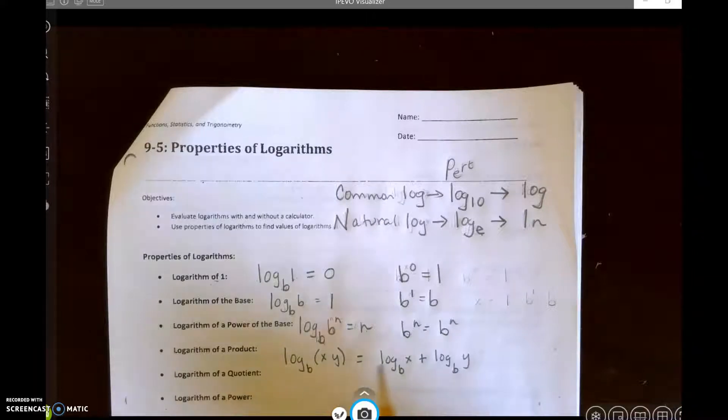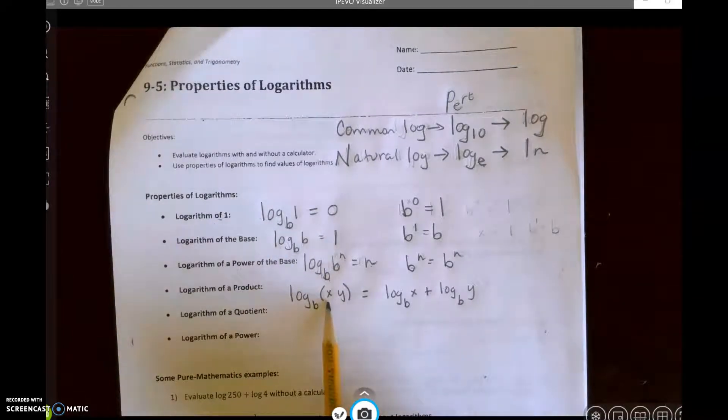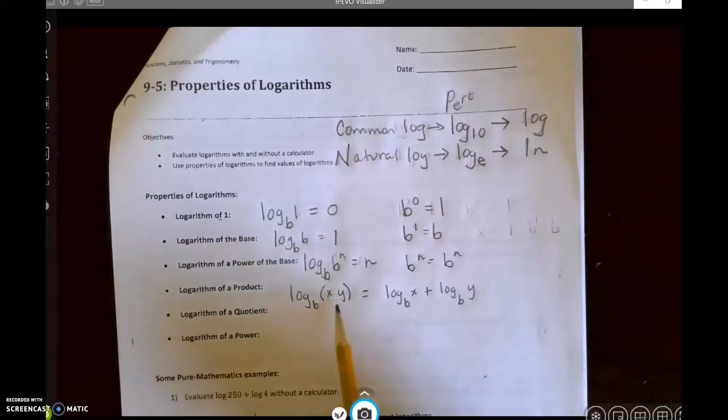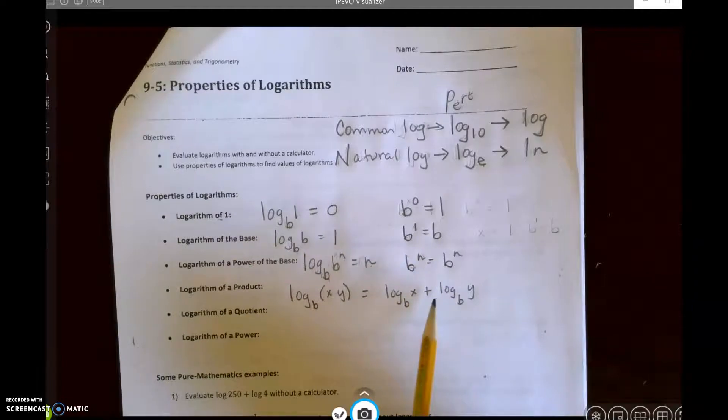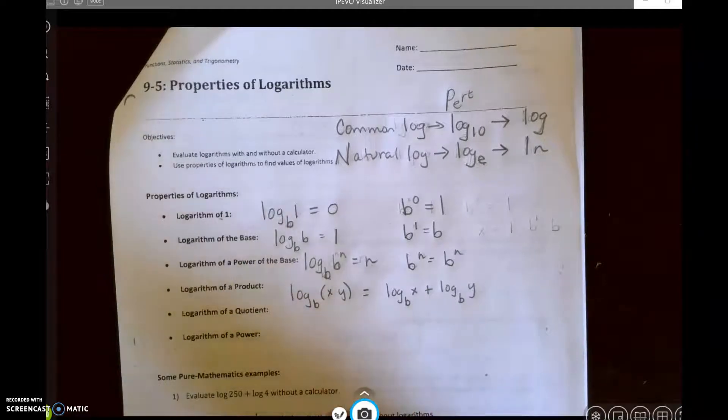So whenever we're doing problems with properties of logarithms, we say that if it's written where it's together or condensed, it's all condensed in one, then we want to expand it. If it's expanded, then we usually want to condense it.